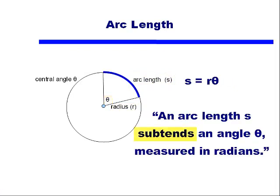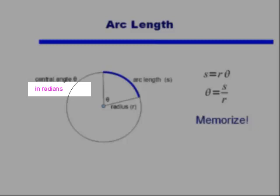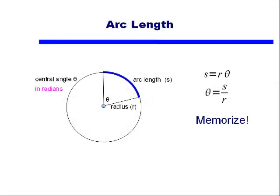An arc length S subtends an angle theta measured in radians. This formula only works if your angle is in radians. This formula does not work if your angle is given in terms of degrees.